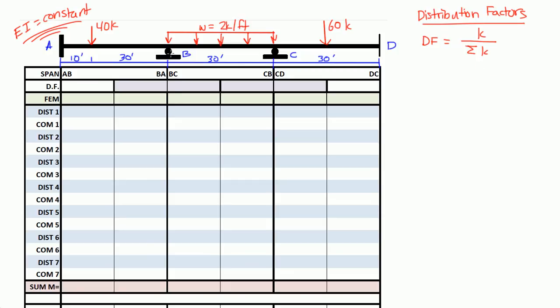So if I was looking at joint B, the k value for BA or the left side of joint B would be I over L for span BA divided by the sum of the k's for the spans that joint B is touching. And joint B is touching spans BA and BC. So it would be I over L of BA plus I over L of BC.